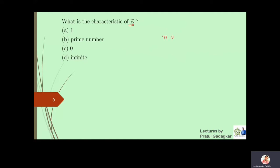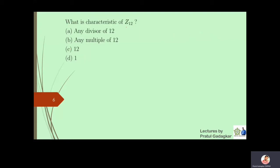The next question is again about the characteristic — this time of Z, the integers. Can we find a natural number n such that n times a equals zero for all a in the set of integers? We cannot find such a number n where n times 3 is zero and n times 4 is also zero, and so on. So we cannot find such a smallest positive number, which means the characteristic of Z is equal to zero.